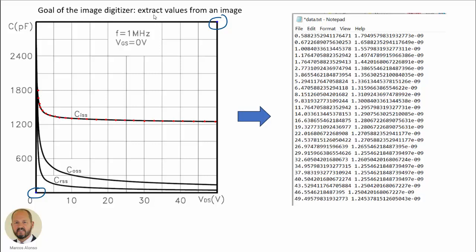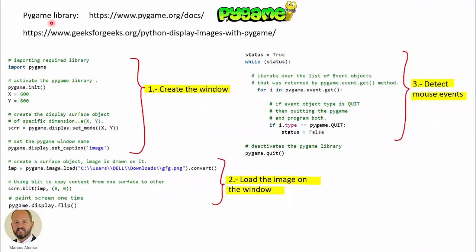The goal of the digitizer is to automatically extract values from an image. For example, we have the characteristics of the parasitic capacitance of a MOSFET as a function of the voltage between the drain and the source. We want to click on the characteristic and get a file with the different points — voltage and capacitance values. For this we also need two additional points to get the scales: the vertical scale in capacitance per pixel and the horizontal scale in voltage per pixel.